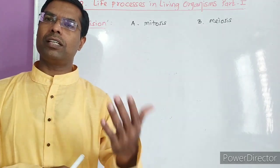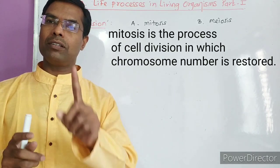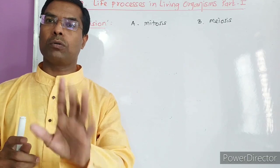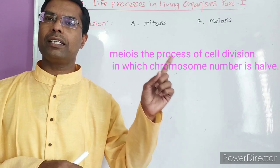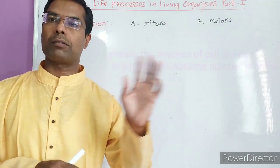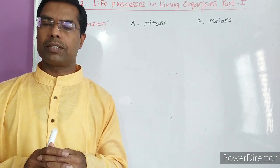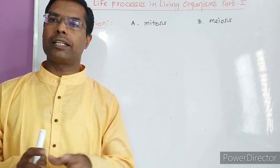In mitosis, when two cells are formed, the chromosome number remains constant. Mitosis is a type of cell division in which chromosomal number is restored. But meiosis takes place in germ cells and chromosomal number is halved. Today we are discussing mitosis.